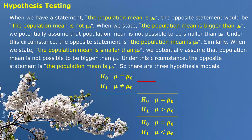For the first case, we call it a two-tailed hypothesis test. When we have null hypothesis mu equals mu0, the opposite part includes both sides — the sample mean could be larger or smaller than mu0. That's why we call it two-tailed, or two-sided. It is also called a non-directional hypothesis test.